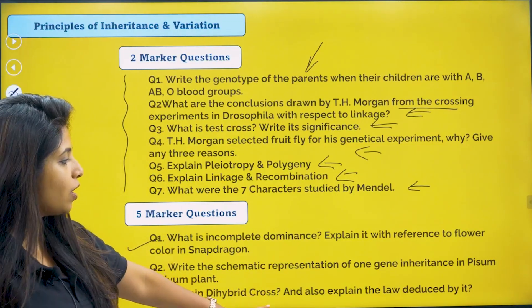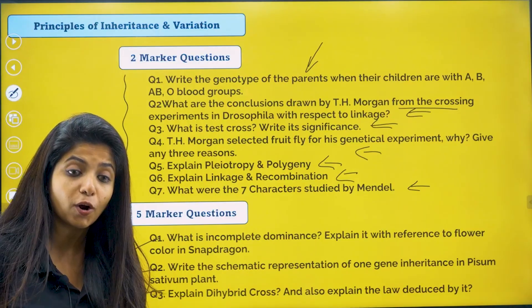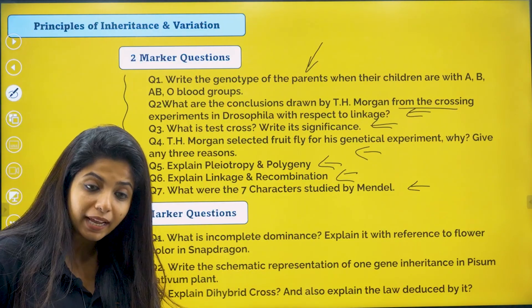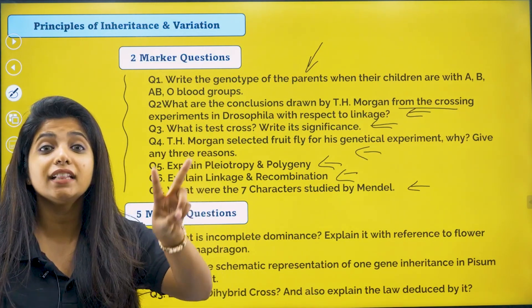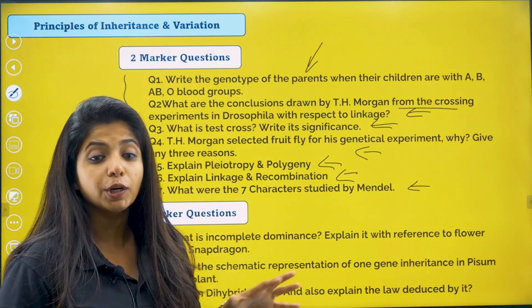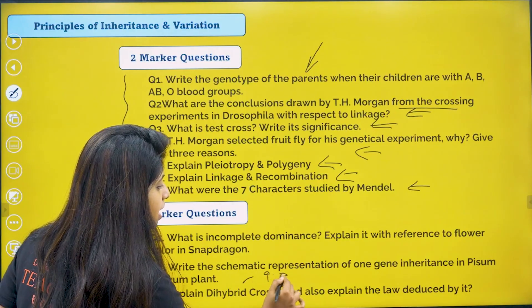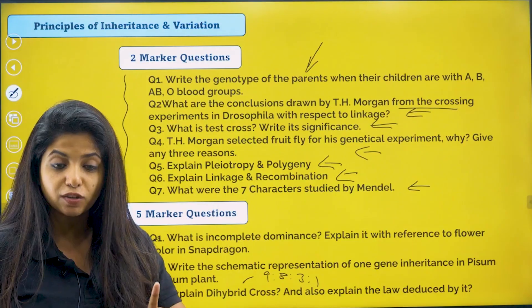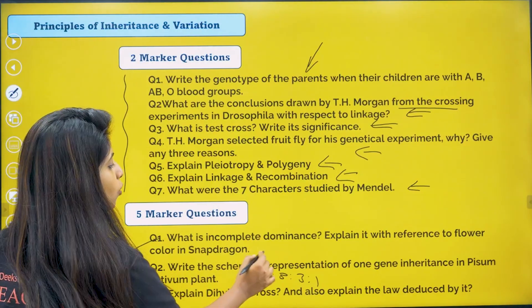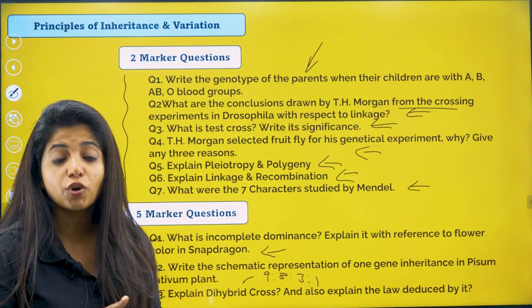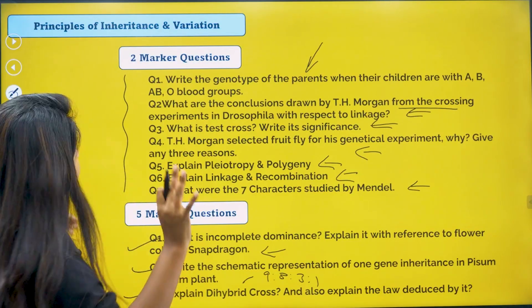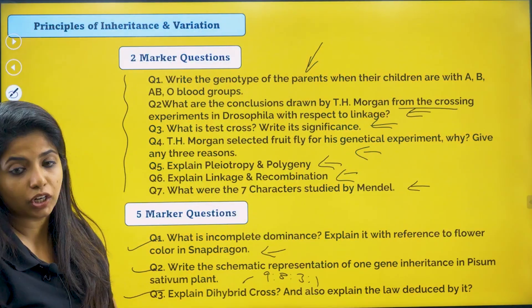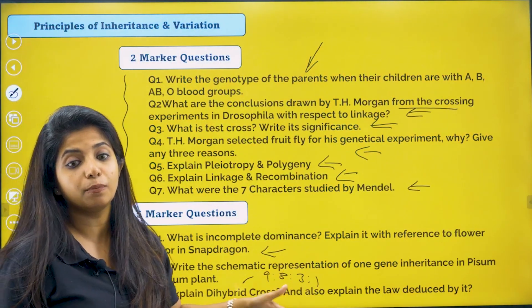Explain dihybrid cross and also explain the law deduced by it. The law of independent assortment is deduced by the dihybrid cross. You have to look at both genotypic and phenotypic ratios. The phenotypic ratio asked in dihybrid cross is 9:3:3:1. In the case of monohybrid cross, both genotypic and phenotypic ratios are asked. Similarly, in the case of snapdragon, please make sure you go through the genotypic and phenotypic ratios. That is all for this chapter, as it only goes up to pleiotropy and polygeny.